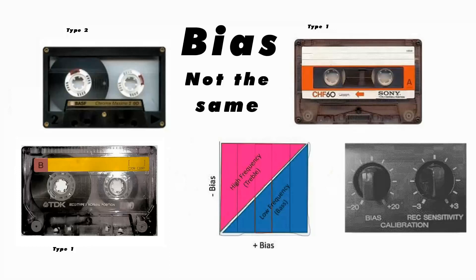But on posh machines you can get controls which are actually there to allow you to fine-tune it. On other really posh machines you can start setting the levels so that exactly what you record is what you get back — to be able to custom-tune the tape to the machine. These things are very nice, they're not necessary, and it depends on what sort of machine you've got. However, if you've got the right tape for the right machine, it doesn't matter whether there are knobs on it or not, because if it's set to that tape it will be giving you the best it can do.